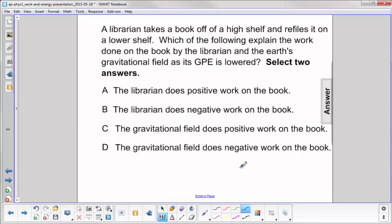A librarian takes a book off of a high shelf and refiles it on a lower shelf. Which of the following explain the work done on the book by the librarian and the Earth's gravitational field as the GPE of the book is lowered? Select two answers.